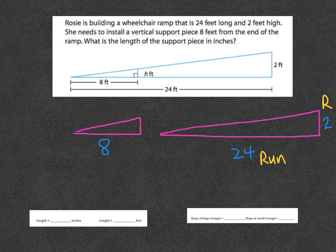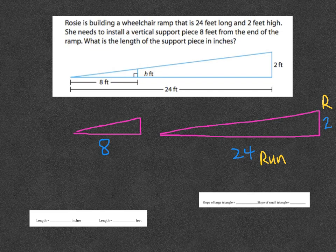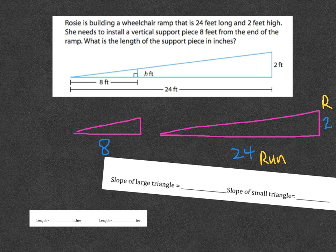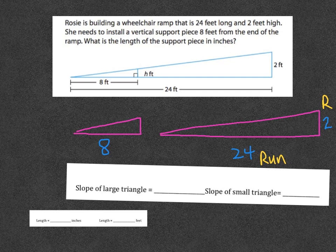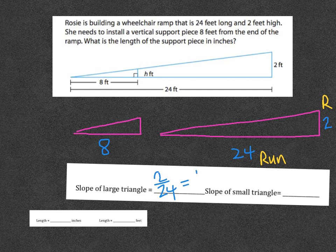So if I said, what's the slope of the big triangle, which is one of the questions for my class, the slope of the big triangle would be 2 over 24, or I can simplify that to be 1/12.